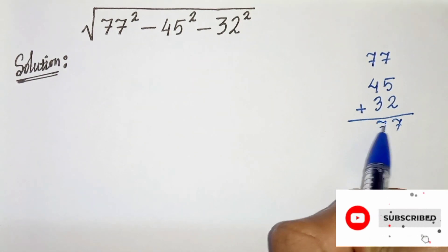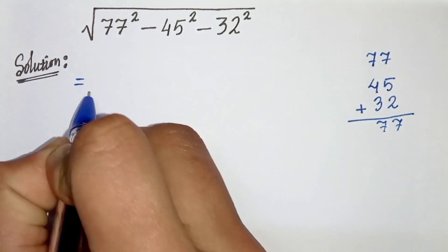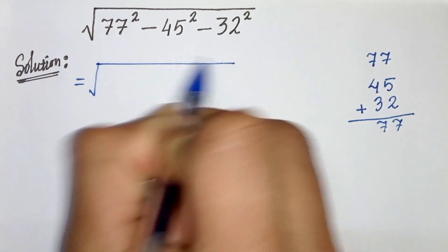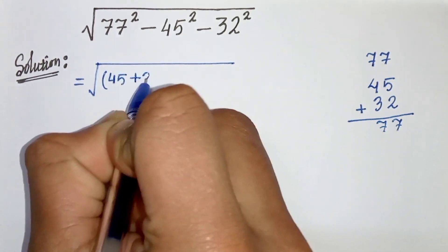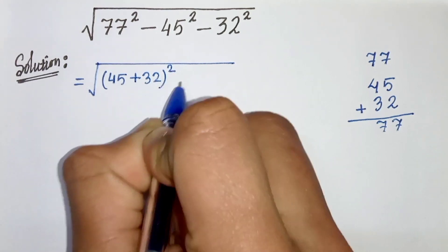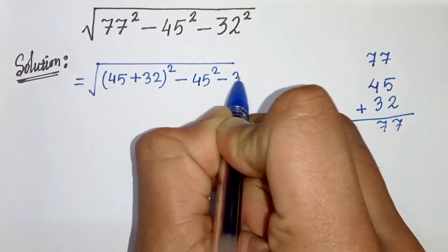So let's replace this here. We can write root under 77 as 45 plus 32 whole square minus 45 square minus 32 square.